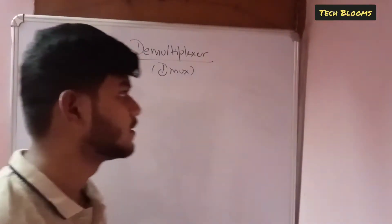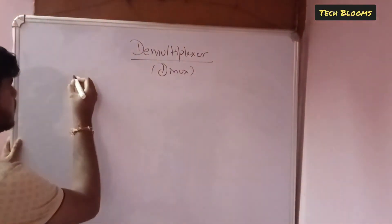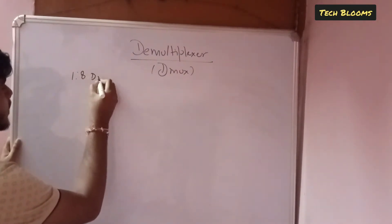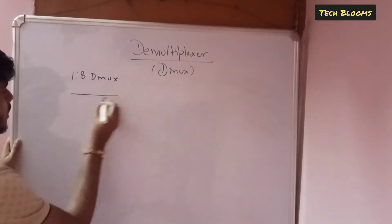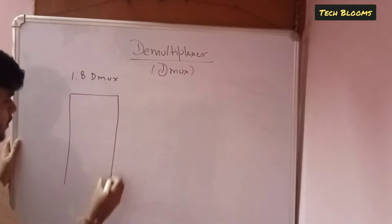Now we will look at 1 is to 8 dmux. First of all we will have the diagram here. Let's start the diagram.